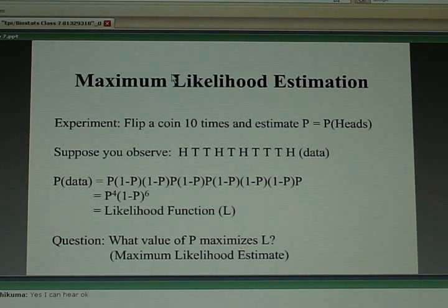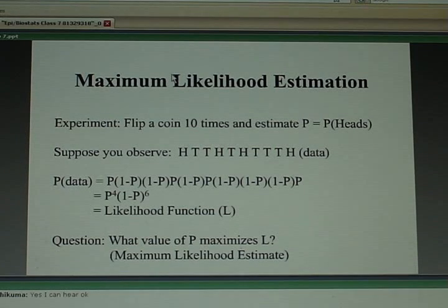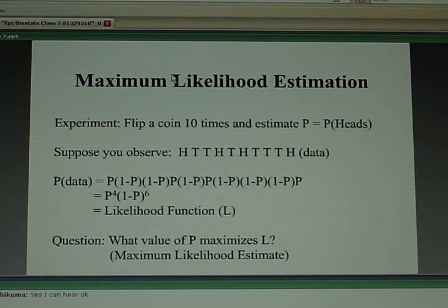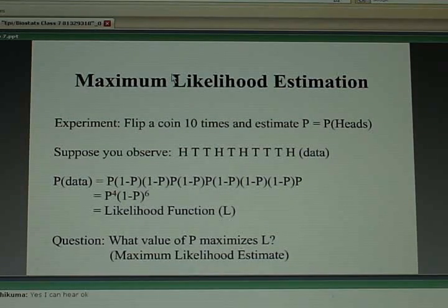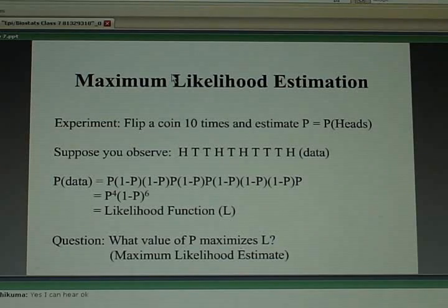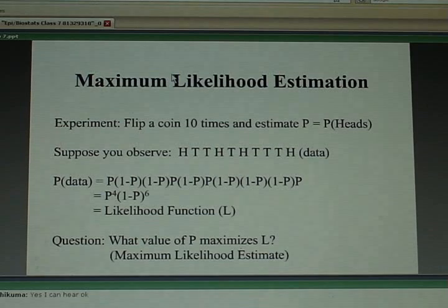Suppose you had a coin to be used to decide how a game begins, and you want to convince yourself it's a fair coin. We want to estimate the probability p that this coin will show heads when flipped. The way we'll estimate that is by doing a study — we're going to flip the coin 10 times. When I did this the other day, I flipped it 10 times and got the following results. This is our data.